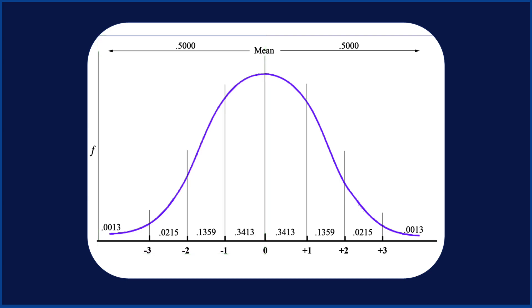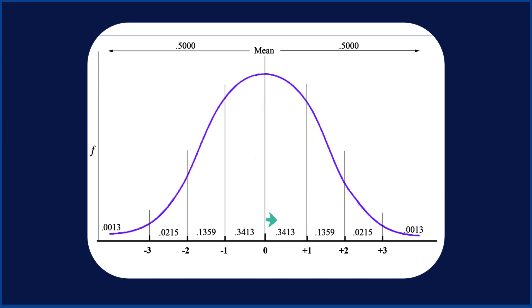In terms of proportion, the value would be .50000. Although there is a standard proportion of scores between zero and two standard deviations, the number of scores from zero to one is not half the amount of zero to two. There are many more scores near the mean. As we move further from the mean, there are fewer and fewer scores.